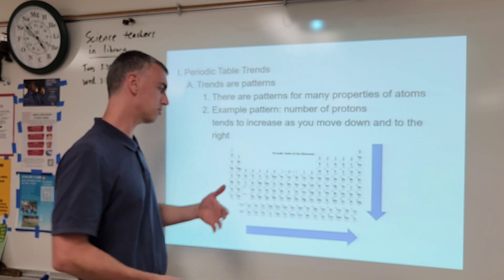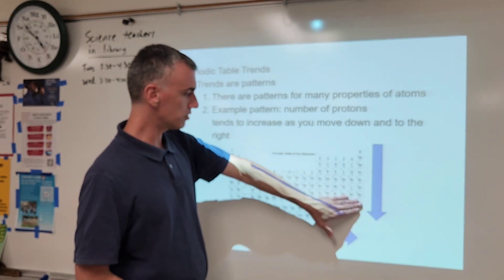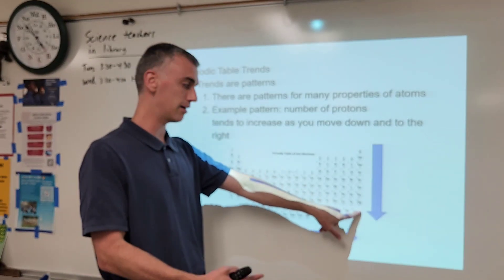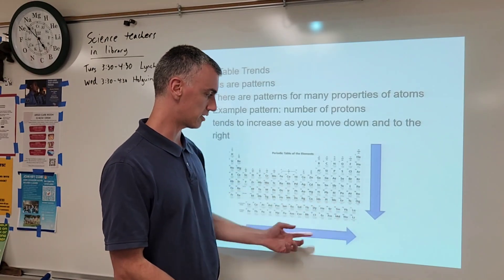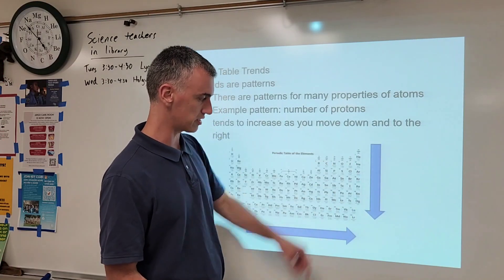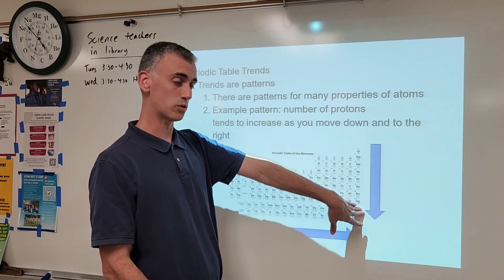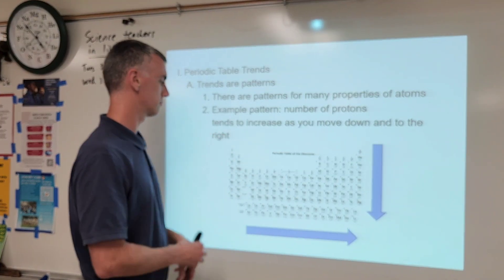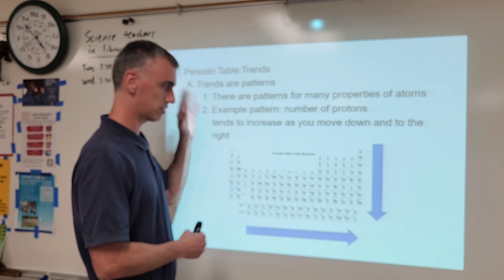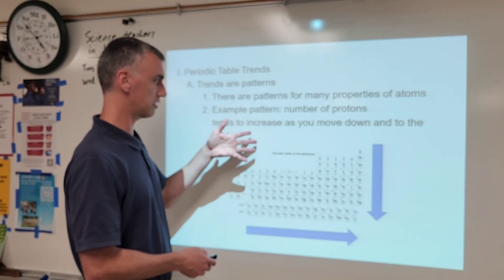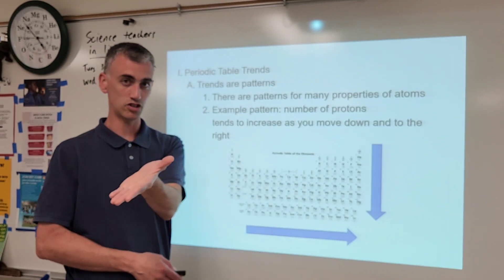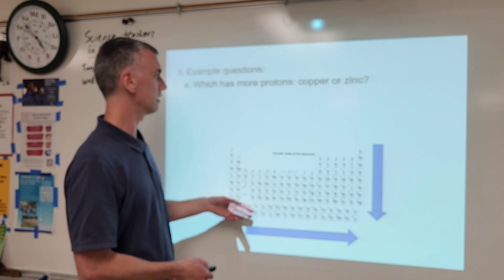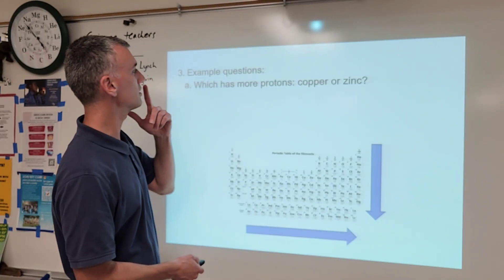That's what you're going to do with patterns. It allows you to make predictions — if you didn't know an atom existed, or if you wanted to create a new element, you can predict it would have a greater number of protons because the trend increases as you go down and to the right. And if you had some random element in the opposite corner, you'd predict it has fewer protons.